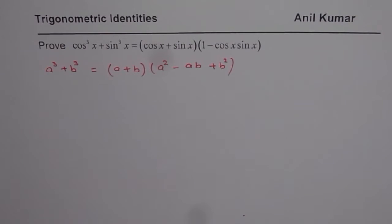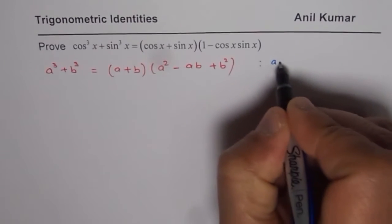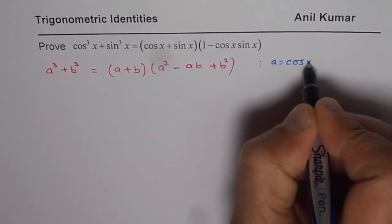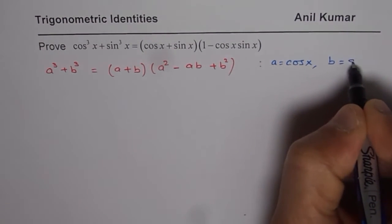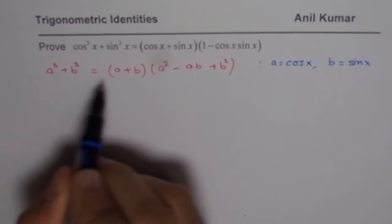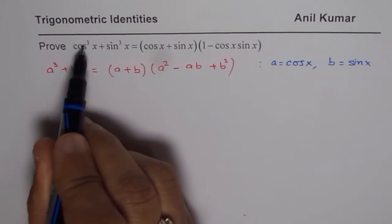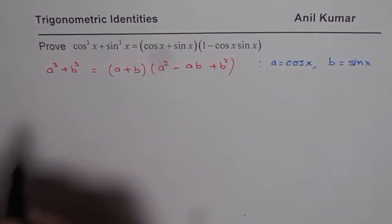In the given equation, you can treat a as cosx. So here what we have is a = cosx and b = sinx. So if I substitute a as cosx and b as sinx, I can actually expand cos³x + sin³x.